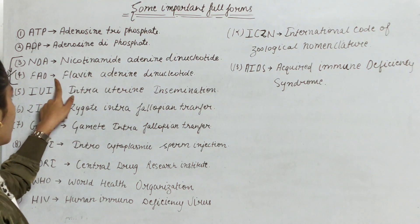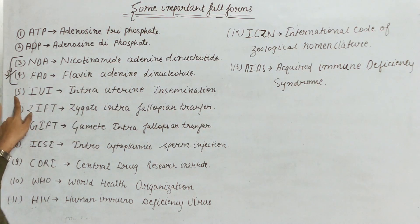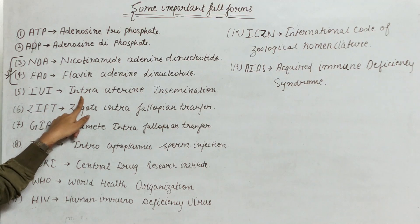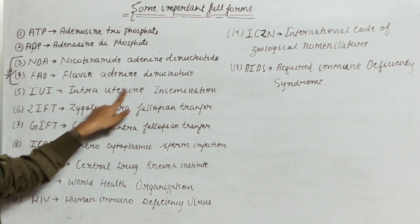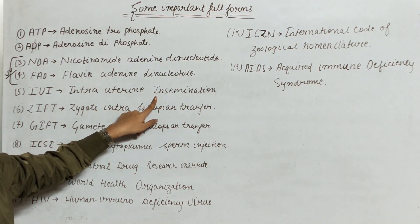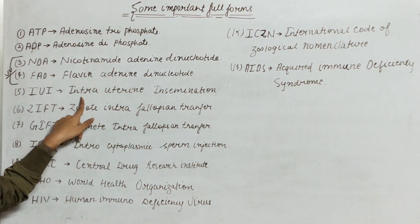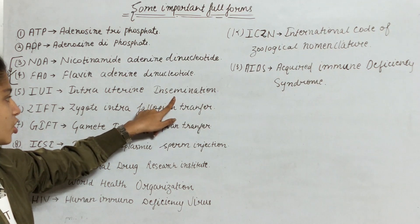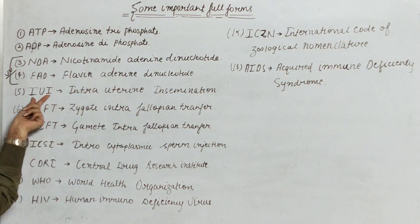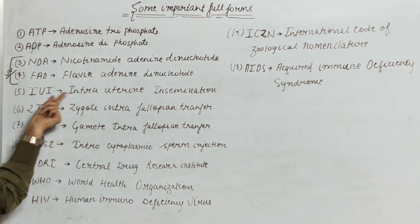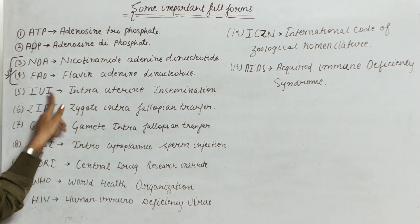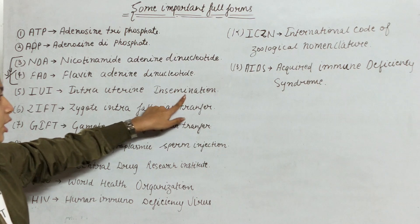Next, the fifth is IUI — Intrauterine Insemination. I stands for Intra, U stands for Uterine, and I stands for Insemination.